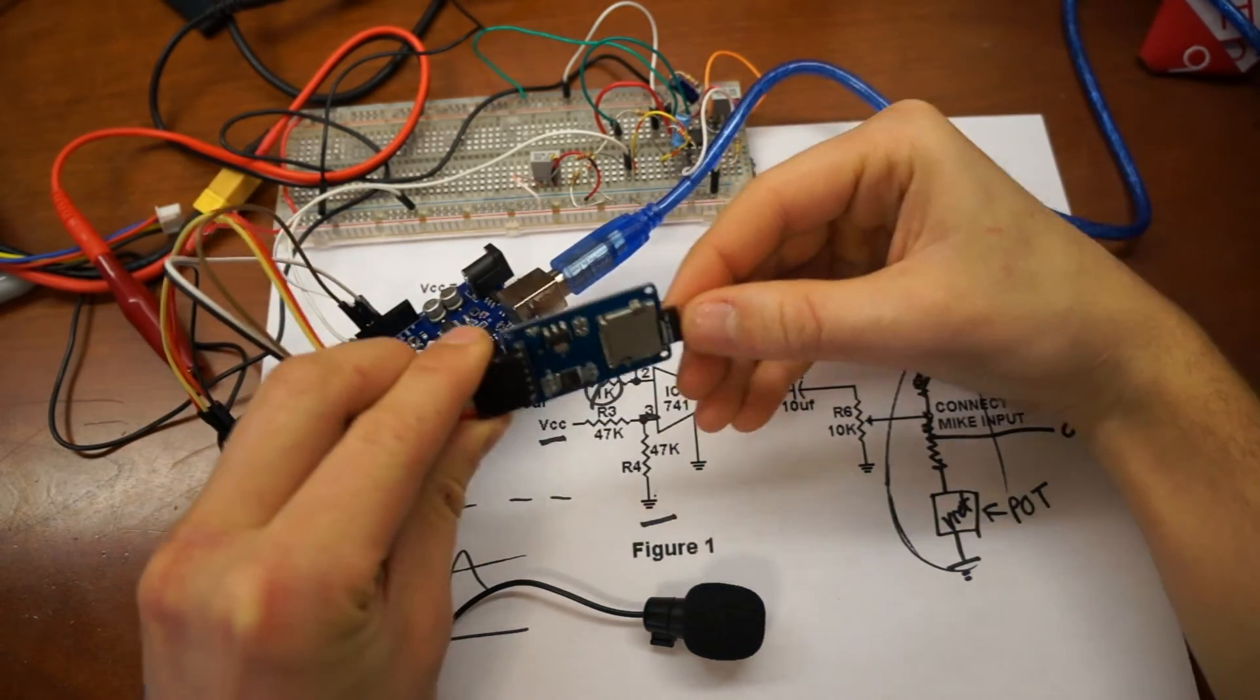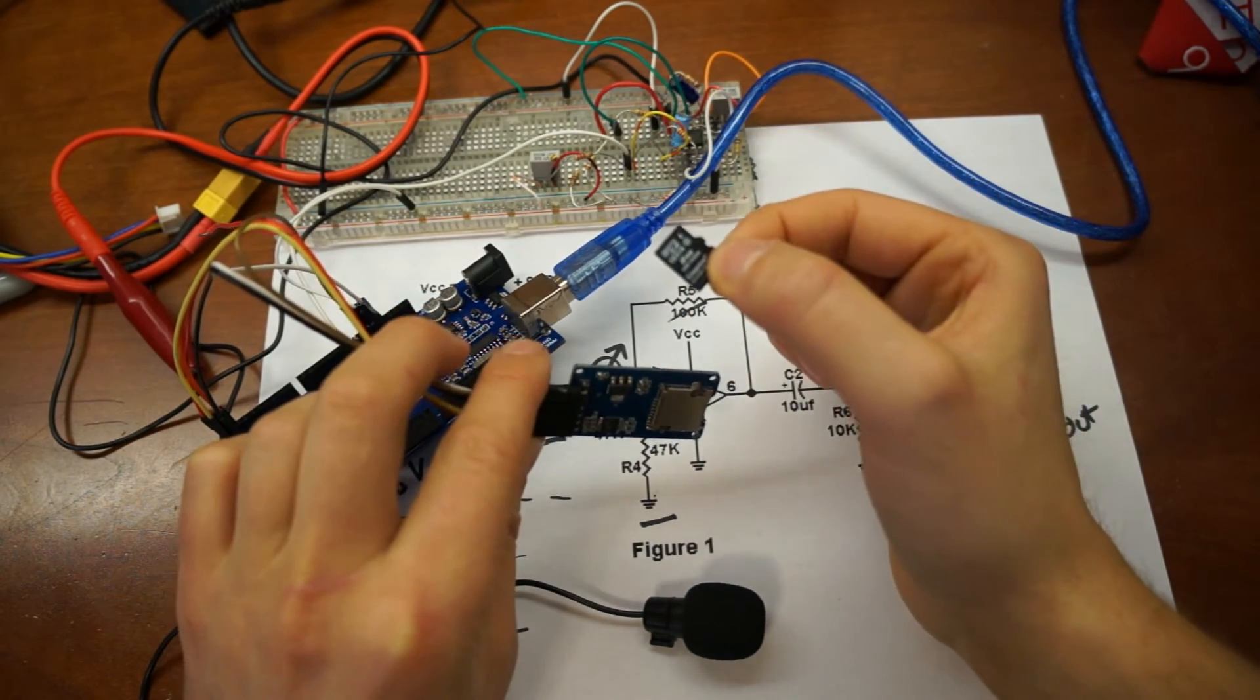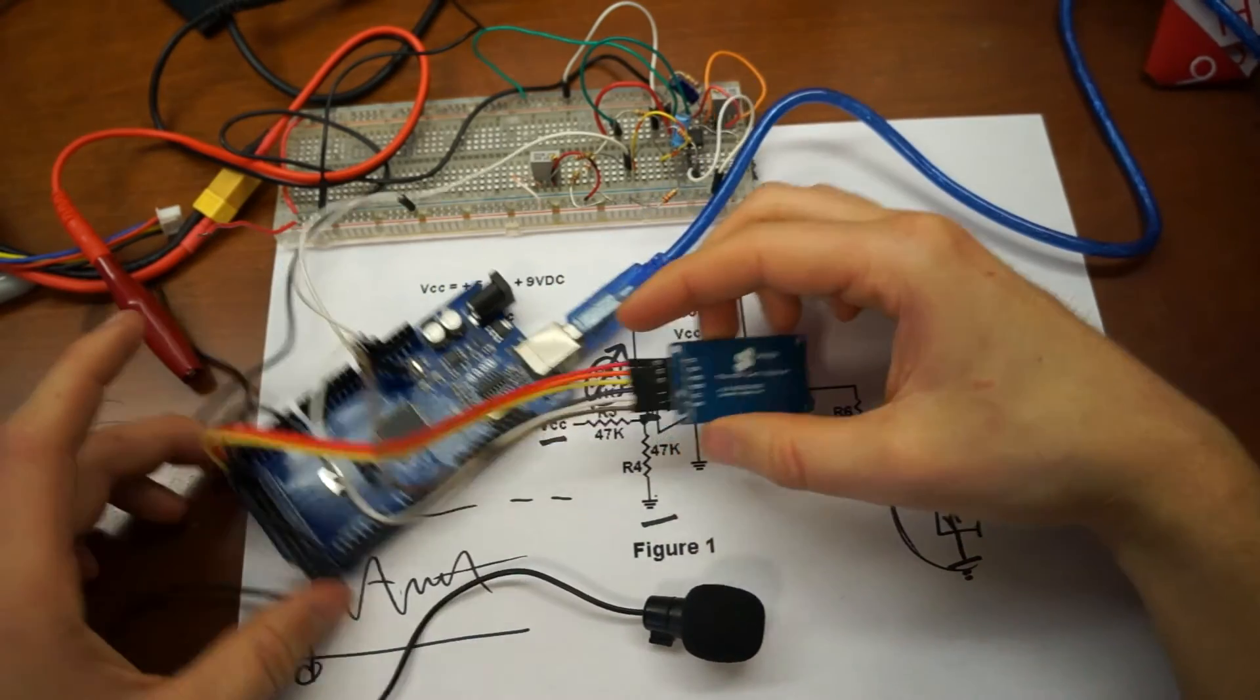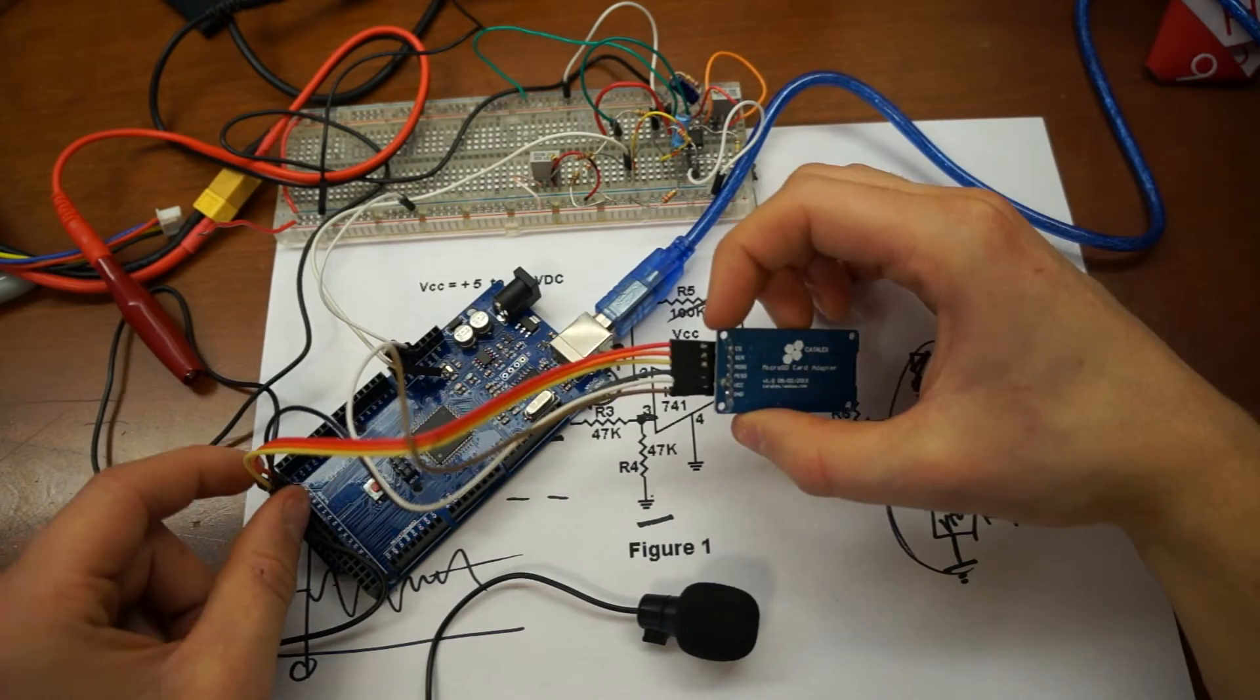And it allows me to store data to up to, I think, 32 gigabytes of microSD removable drives. That is wired into the Mega. And it's talking over SPI communication, I believe.